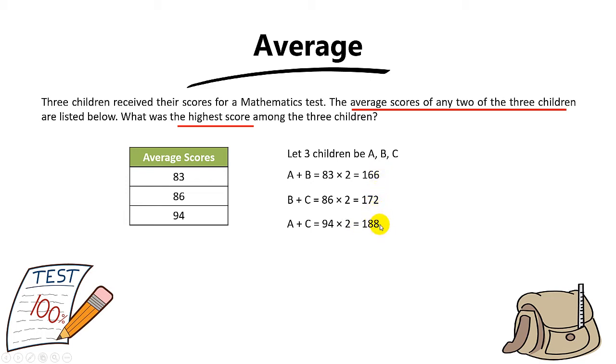Now based on these three equations, what do we do? We can combine them together in a single equation by adding up the three of them. So A plus A gives 2A, B plus B gives 2B, and C plus C gives 2C. We take 166 plus 172 plus 188, you should get 526.